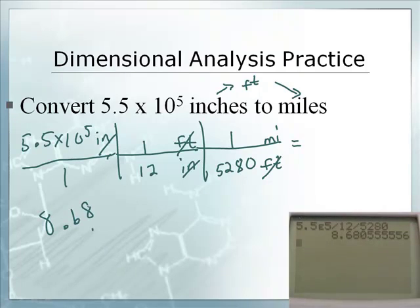8.68. No. 8.7. Two sig figs. 8.68, and that would be miles. Or we can only keep two sig figs because of this, so it would be 8.7 miles.